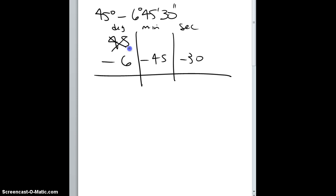So I'm going to change my color here. I'm going to change this to 44. So in a sense I borrowed a degree or I ungrouped a degree. When I do that, that gives me 60 here.